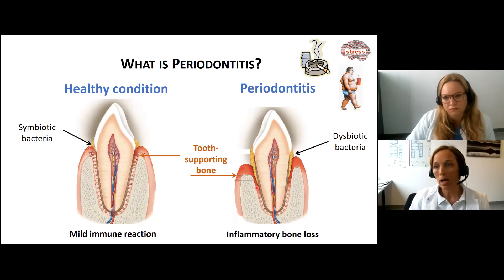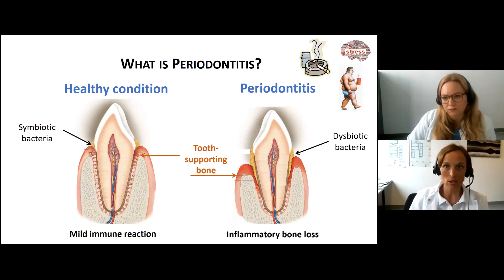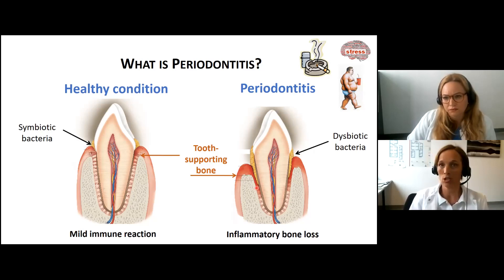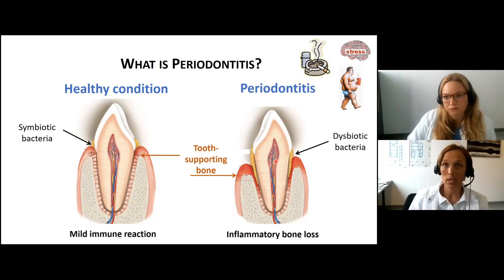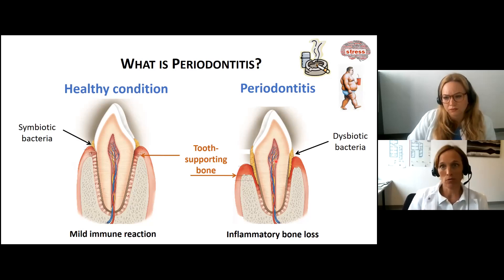Periodontitis is caused — or rather initiated — by periodontopathogenic bacteria, because many other factors influence the onset and progression of periodontal destruction. For example, heavy smoking (more than 10 cigarettes per day) is an important risk factor, but also diabetes, adiposity, an unhealthy diet high in sugars, and stress. We also know that there are some genetic risk factors for periodontitis.